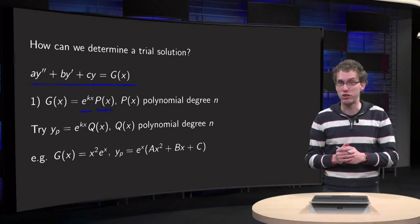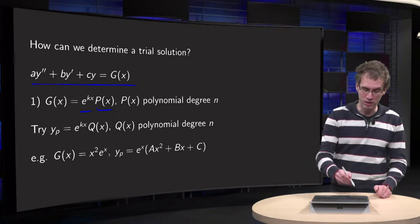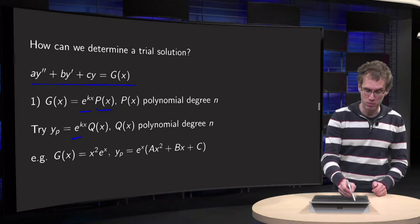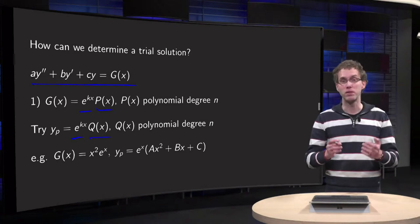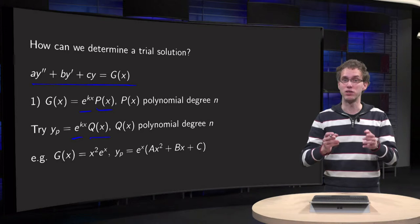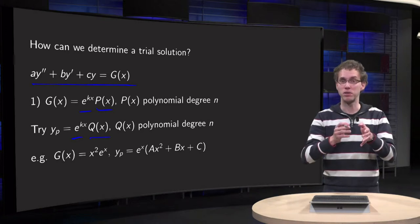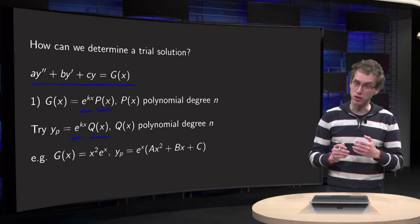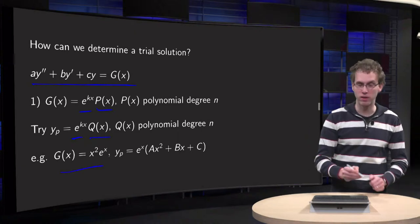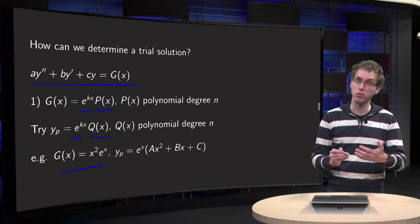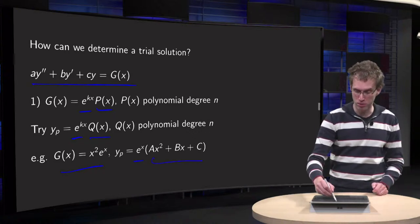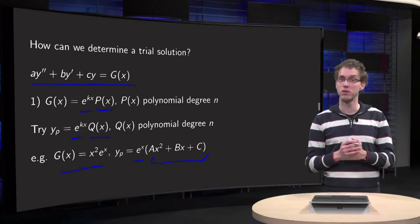What would be the trial solution in that case? Try y_p equals e to the power kx times q of x, where q of x is an arbitrary polynomial of degree n. So it contains A times x to the power n plus all the lower order terms. For example, if you have g of x equals x squared times e to the power x, a good trial solution would be e to the power x times a general second-order polynomial, so Ax squared plus Bx plus C.